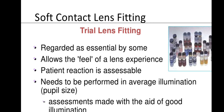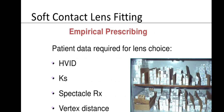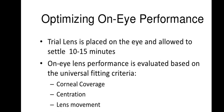Trial lens fitting is essential: it allows the patient to feel the lens and enables assessment of reactive needs. It should be performed under average illumination, with pupil size assessment under good illumination. Select the trial lens back vertex power nearest to the calculated prescription. If prescription is high but only a low-power trial lens is available, consider obtaining a more appropriate trial lens.